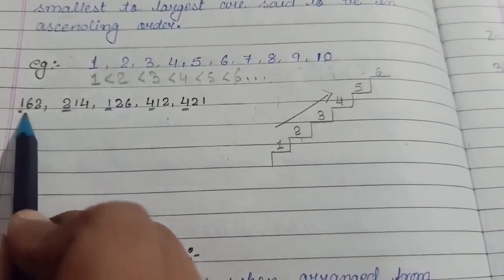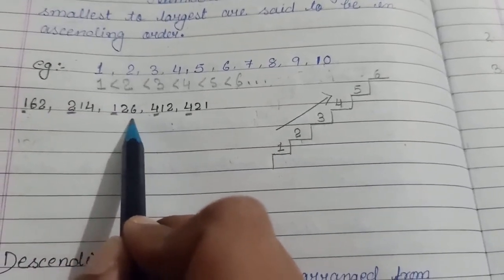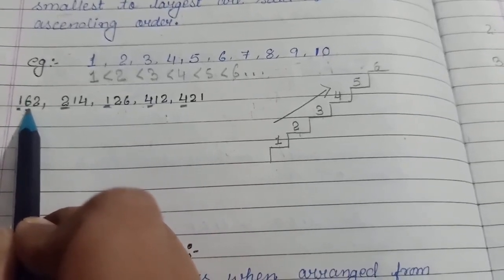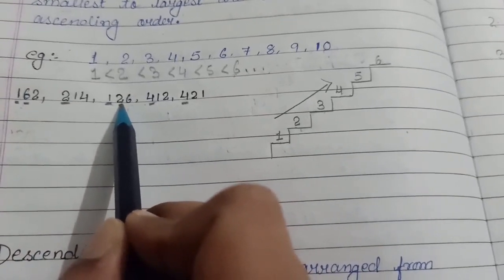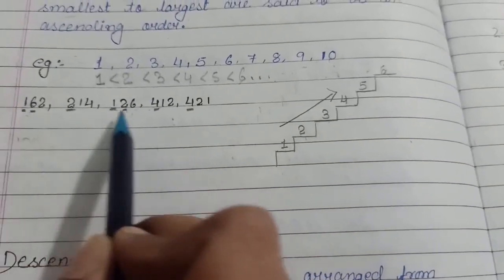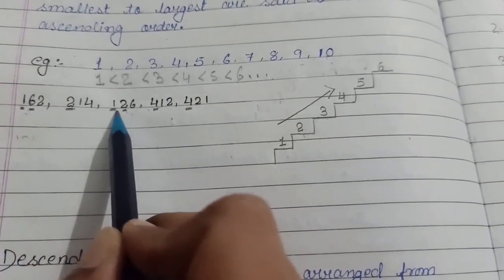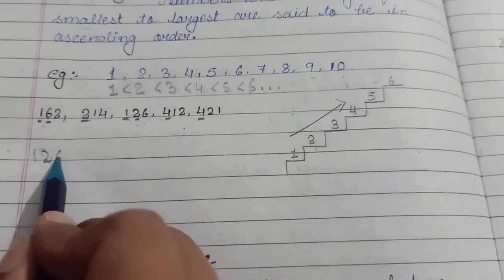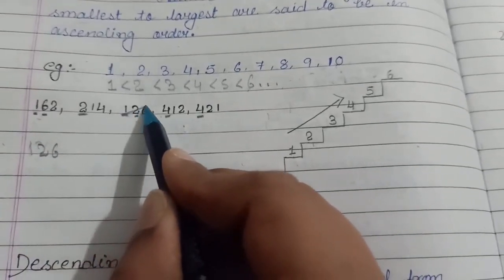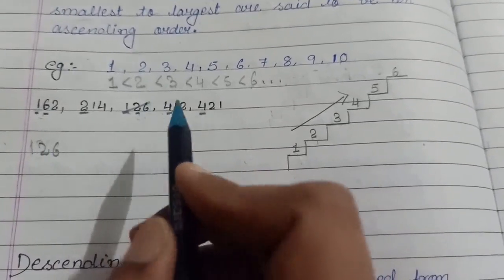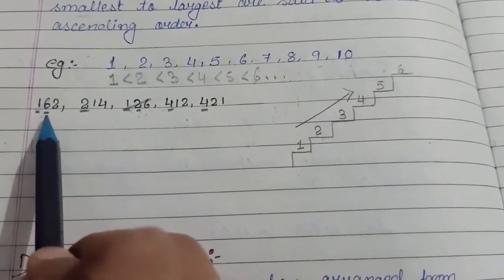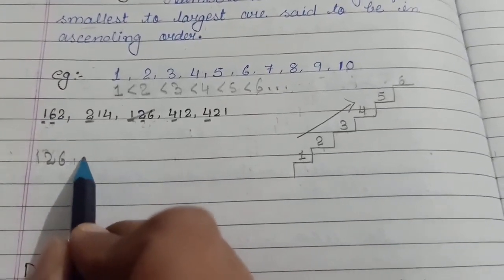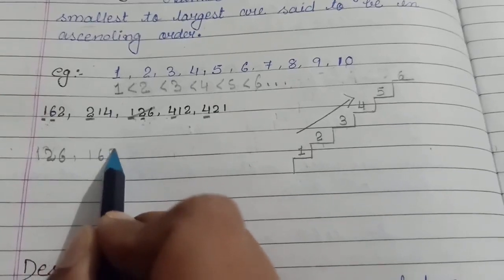Now these 2 numbers we will compare first. The hundreds place are the same, so we will see the tens place. Here it is 6 and here it is 2. Which one is smaller? 2 is smaller than 6. So this will be the smallest number and we will write 126 here. 126 is the smallest number and we will cross it so that we will not get confused. Now this is the second smallest number, so we will write 162.